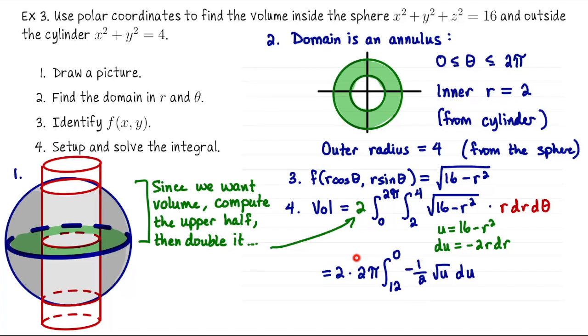And then the √(16 - r²) is √u. r dr is -1/2 du. When r is 2, u is 16 - 2², so that gives us a lower bound for this integral of 12. And when r is 4, u is 0.